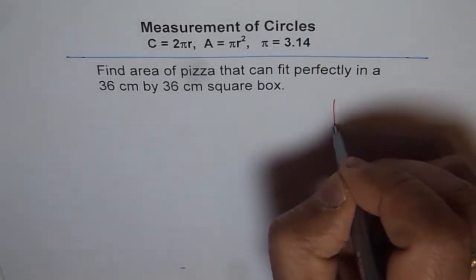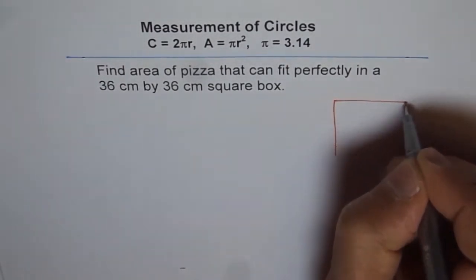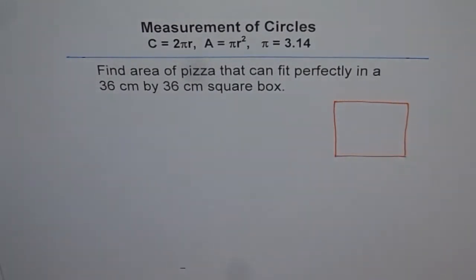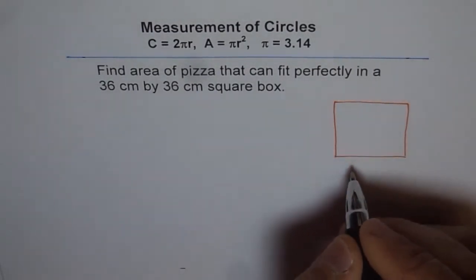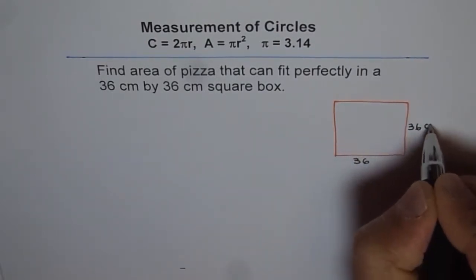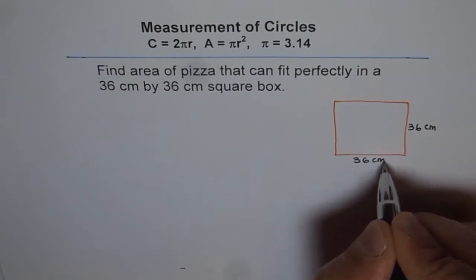So what we are trying to say is that here we have a box which is square, that means all sides are equal. And the side length is 36 by 36 centimeters. So that is the square box.